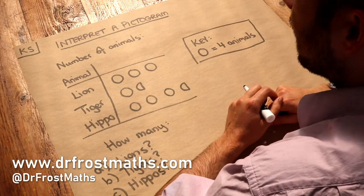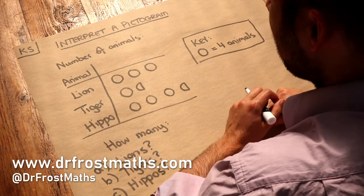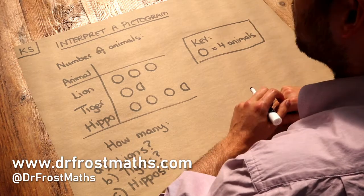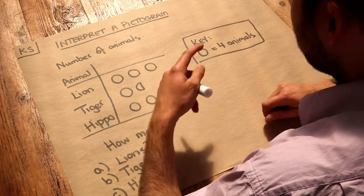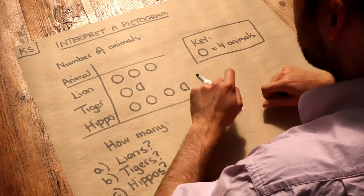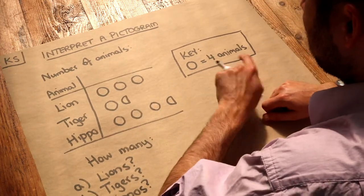Hello and welcome to this Dr. Frost Maths key skill video on interpreting a pictogram. A pictogram represents how many of each thing we have, known as the frequency, but using symbols to represent a quantity.